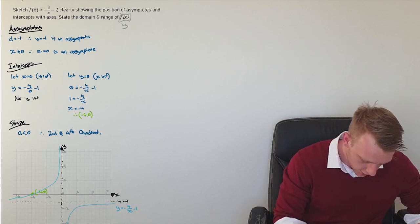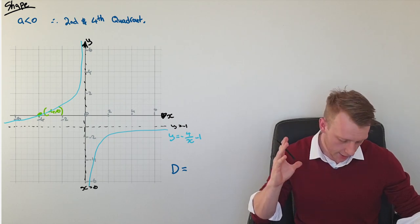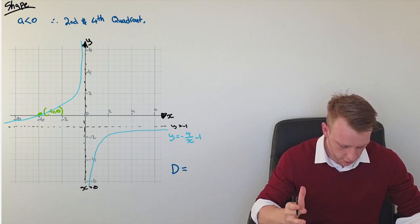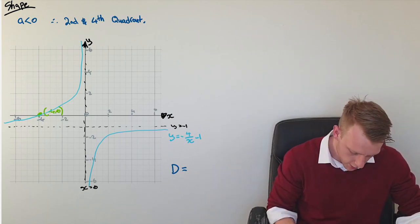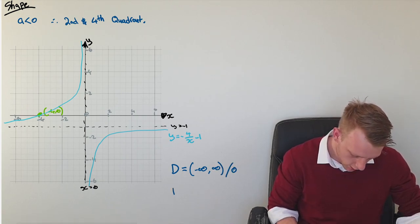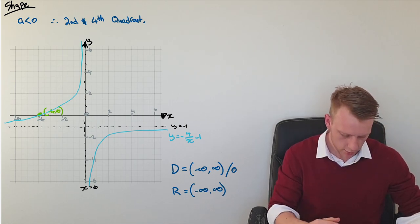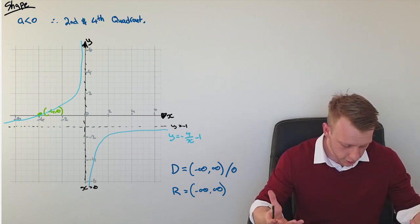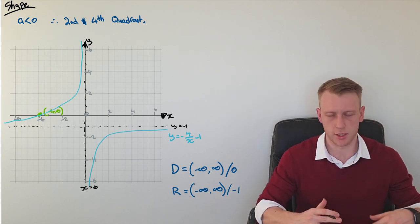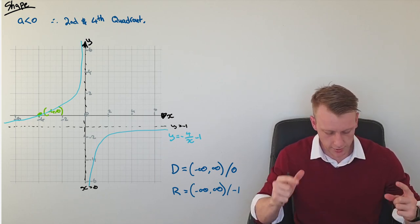Now with the domain and range, just having a look at the graph, the domain is the input values that you can put into this function. Here we can see that you can put everything into the function except x being equal to zero. That's an asymptote point. So that means you go from negative infinity all the way through positive infinity excluding the point zero. Similarly goes for the range. You can include any point that can come out of this function except for the point y being equal to negative one. So the range is everything from negative infinity to positive infinity except for that point negative one. So that is a simple familiar question.